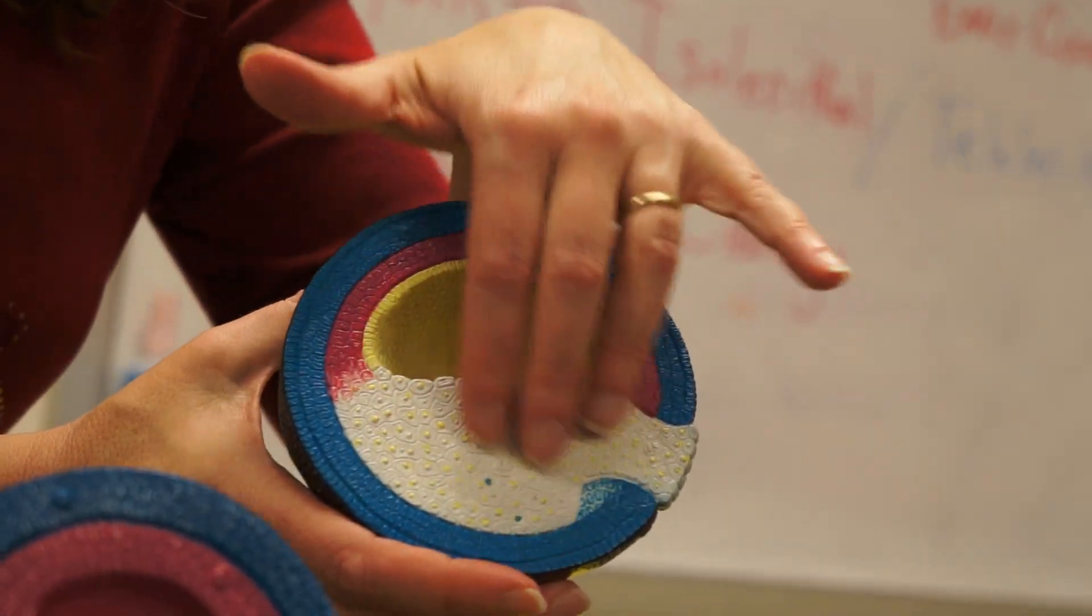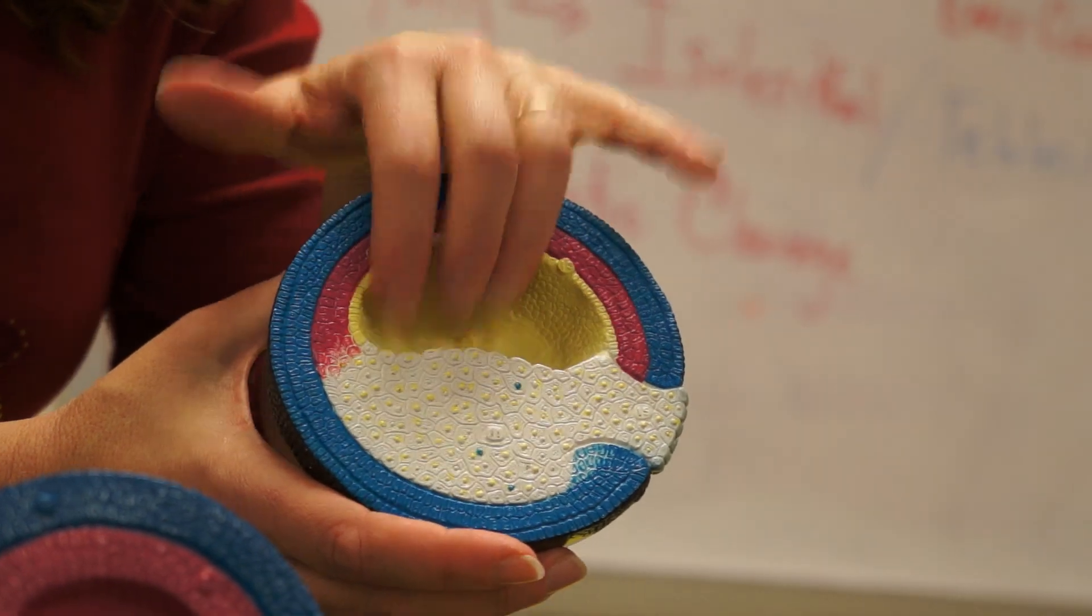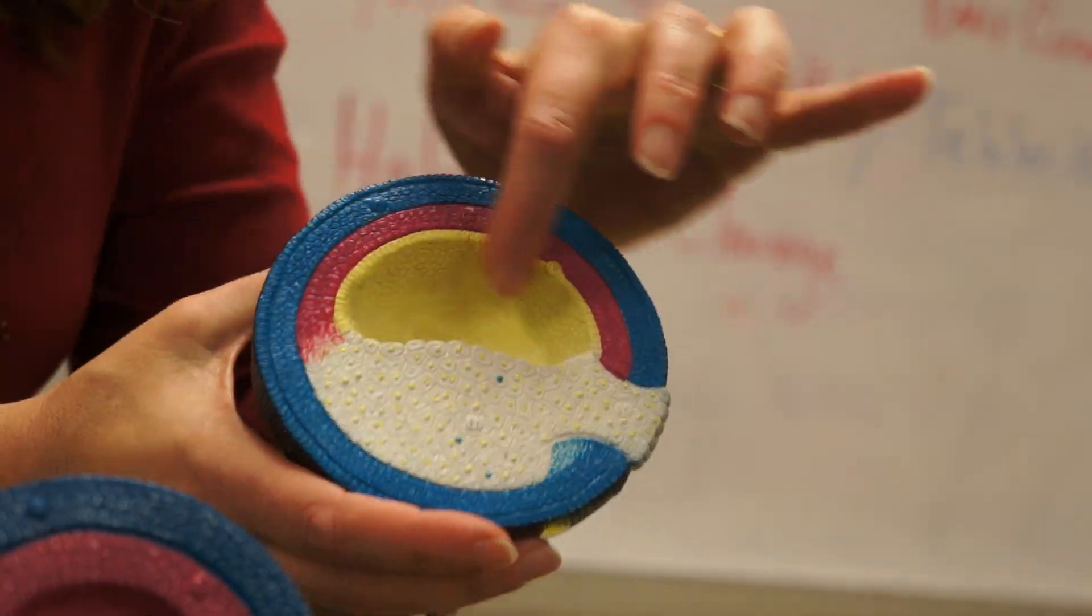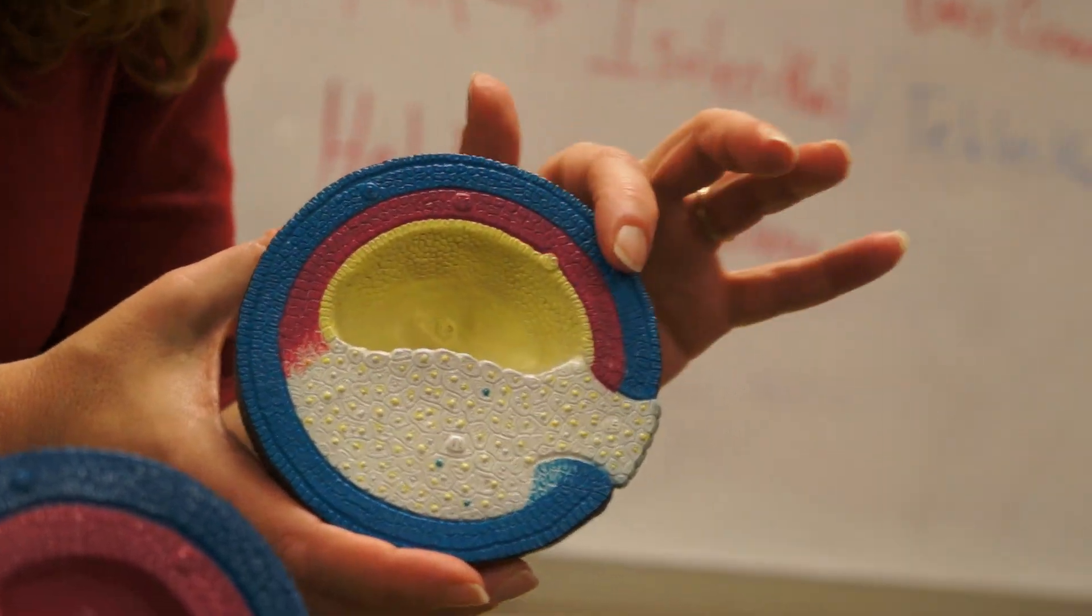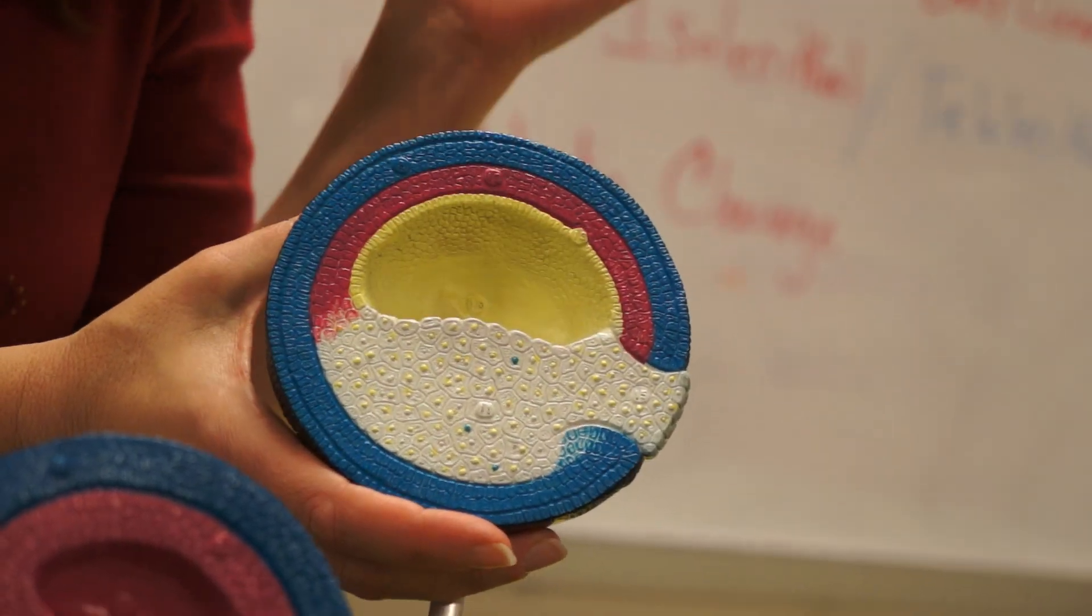Inside the archenteron here, all of the yolk cells are inside the archenteron. The lining of the archenteron is the endoderm, this yellow cell layer. The outer blue layer is the ectoderm and the middle layer is the mesoderm.